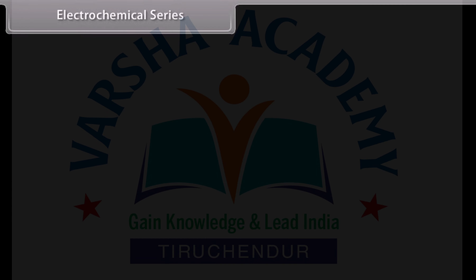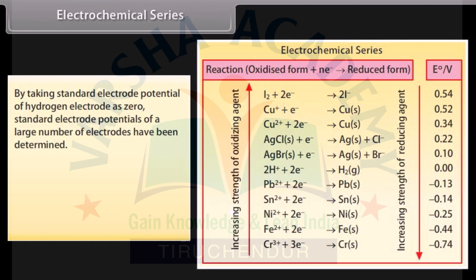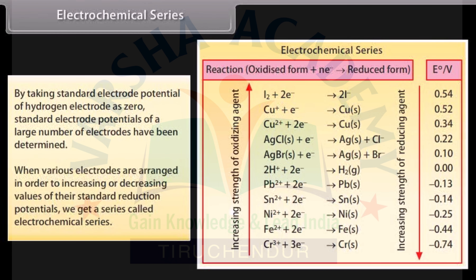Electrochemical series: By taking the standard electrode potential of the hydrogen electrode as zero, standard electrode potentials of a large number of electrodes have been determined. When various electrodes are arranged in order of increasing or decreasing values of their standard reduction potentials, we get a series called the electrochemical series.